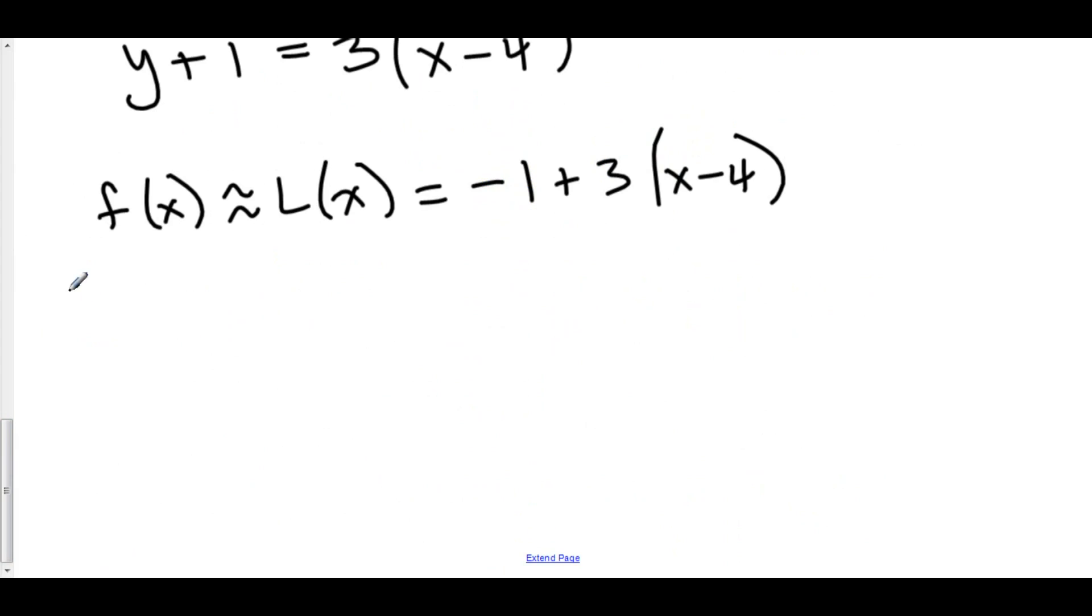This means that f of 4.2 is approximated by l of 4.2 which equals negative 1 plus 3 times 4.2 minus 4 is 0.2. 3 times 0.2 is 0.6 minus 1 is negative 0.4.